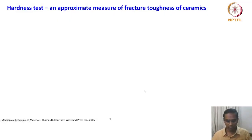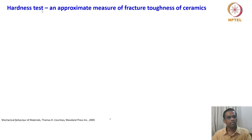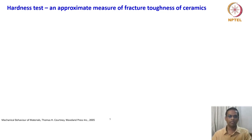Having described the sophisticated hardness methods, we now look at how hardness measurement is useful in finding out something else. Hardness test is an approximate measure of fracture toughness of ceramics. The fracture toughness is measured by just measuring the hardness in ceramics. Ceramics exhibit very, very poor ductility and the fracture toughness of ceramics is very, very poor. But improving the fracture toughness in ceramics is a huge and very important technology.